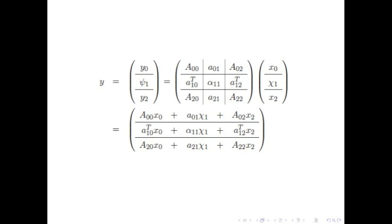Notice that the sizes of the different submatrices and subvectors have to match in a very specific way. The column size of A00 has to match the size of x0; otherwise A00 times x0 is not valid. We concisely indicate this by saying that the partitionings of A, x, and y have to be conformal — meaning the sizes must be such that the operations make sense.